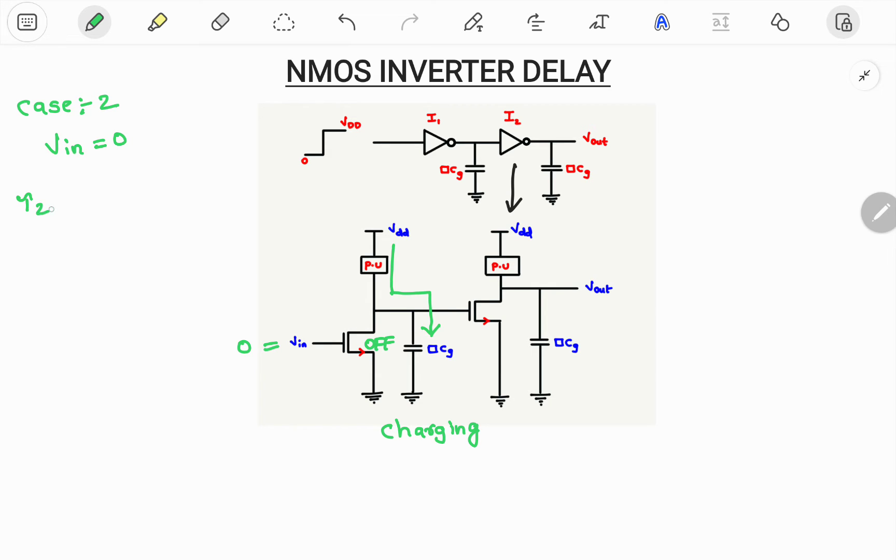So I will take it as tau 2 which is again same. Always tau is indicated with R into C. But here the difference is this particular resistor will get involved. So this can be indicated with R pull up or else you can write it as RP. So I will take it as R pull up into CG. This is our equation number 2.